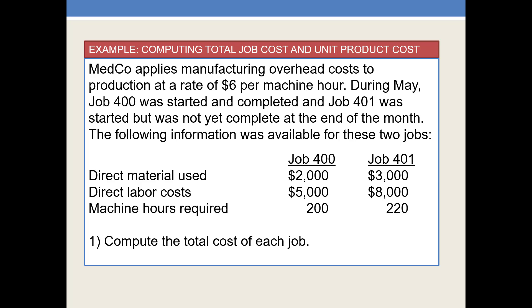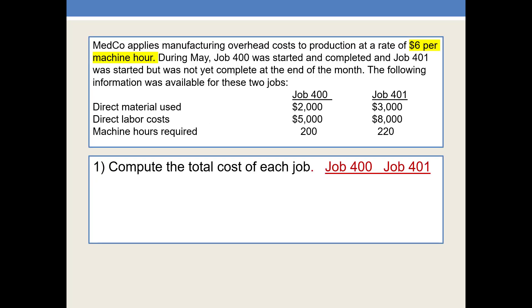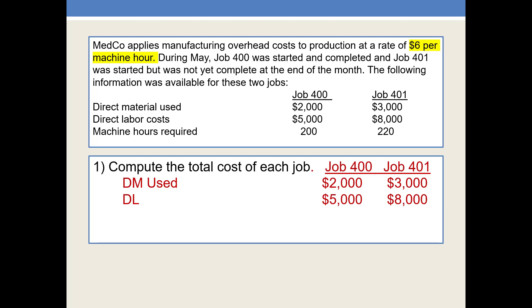The first thing we're going to do is compute the total cost of each job. I have set up a column for each of the jobs, and I've highlighted that we apply overhead at a rate of $6 per machine hour. To find the total cost of a job, you will assign the three production costs to it. Direct material used is $2,000 for Job 400 and $3,000 for Job 401, and direct material is assigned directly to each job. Likewise, direct labor is assigned directly to each job — $5,000 for Job 400 and $8,000 for Job 401.